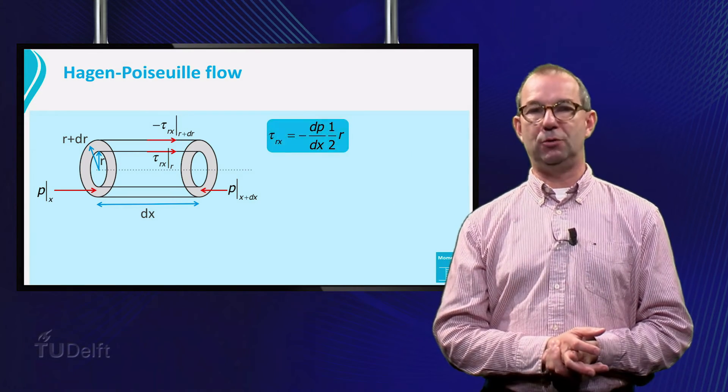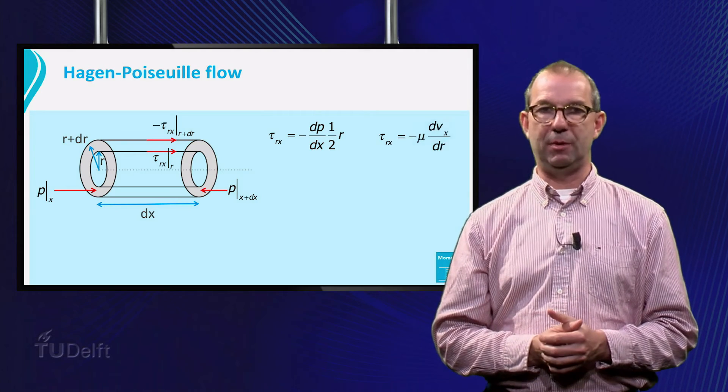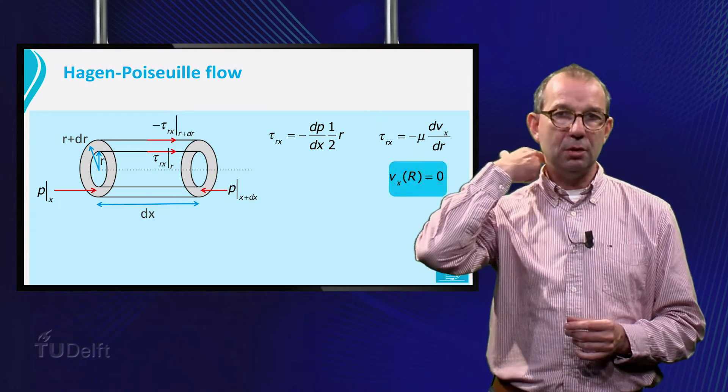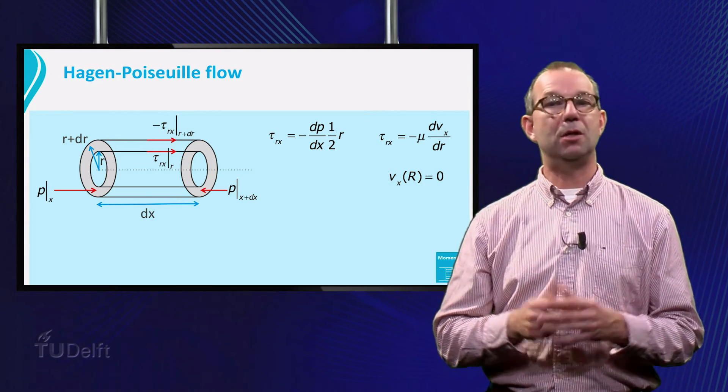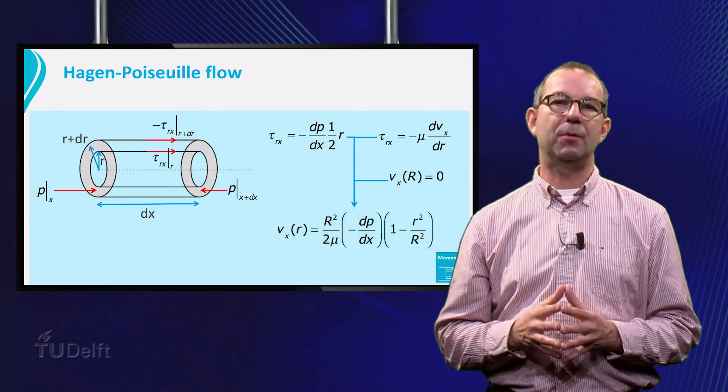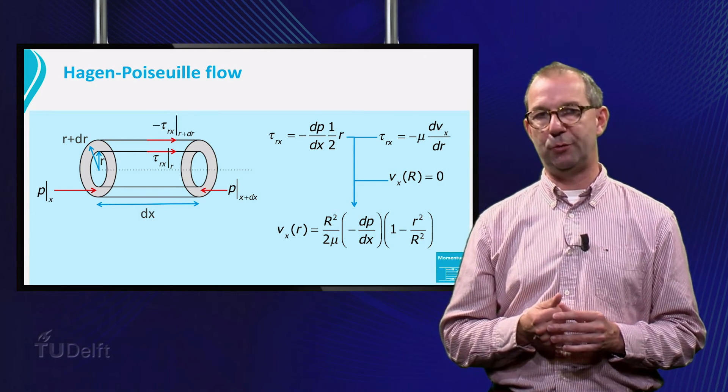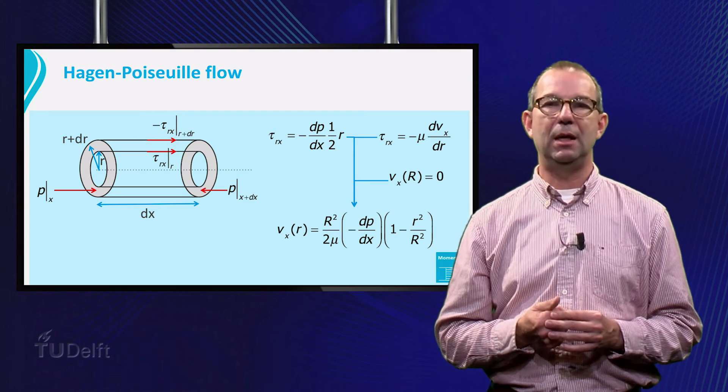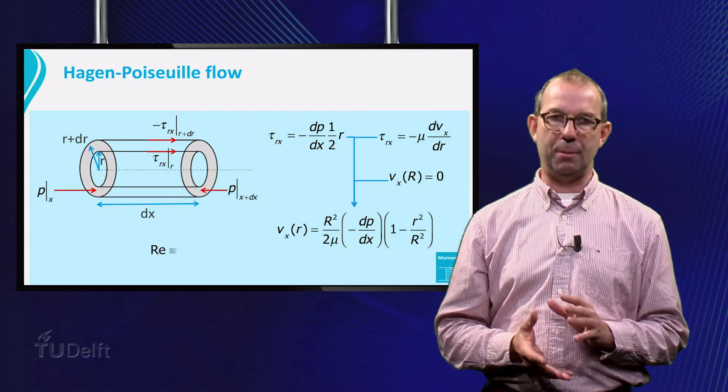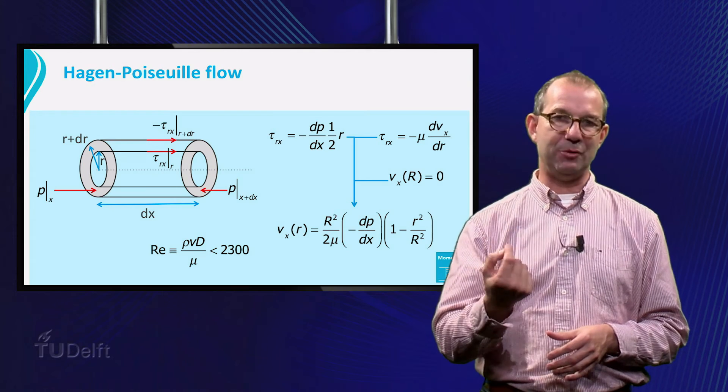The velocity profile is now found the standard way. Use that we deal with a Newtonian liquid. Put in the boundary conditions that at the wall of the tube the velocity is zero, and solve the equation. We find that the velocity is a parabola of the radial position. This is Hagen-Poiseuille's solution of the flow of a Newtonian fluid in a straight cylindrical tube. It holds for cases with a Reynolds number of 2300 or less, with Reynolds based on the average liquid velocity.